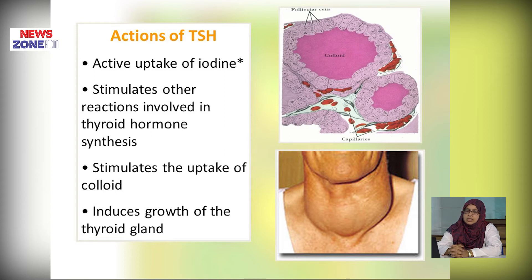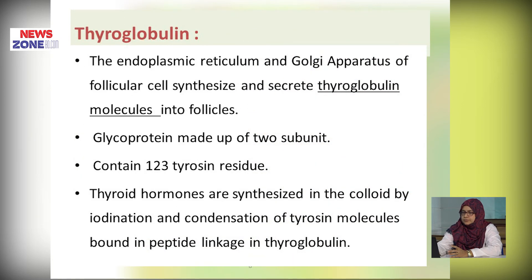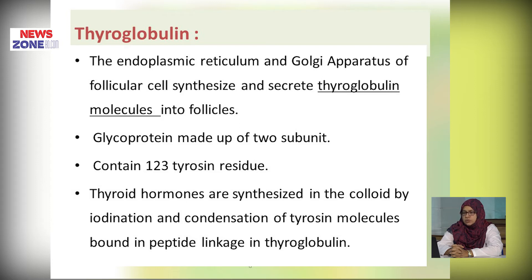Thyroid stimulating hormone action causes increased uptake of iodine, stimulates reactions involved in thyroid hormone synthesis, stimulates uptake of colloid, and also induces growth of the thyroid gland. Thyroglobulin is a globular protein produced in the endoplasmic reticulum of the follicular cells, then secreted as a colloid particle into the follicle. It has two subunits and contains 123 tyrosine residues. Thyroid hormones are synthesized in the colloid by iodination and condensation of tyrosine molecules bound in peptide linkage in thyroglobulin.